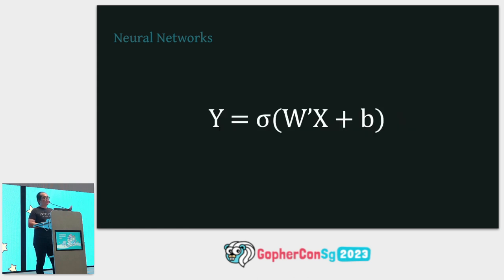Here we see W and B — these are called weights and biases, and we also call them parameters. When there are more parameters than data, so when there are more rows of W than rows of X in your entire training set, we say that a neural network is over-parameterized.